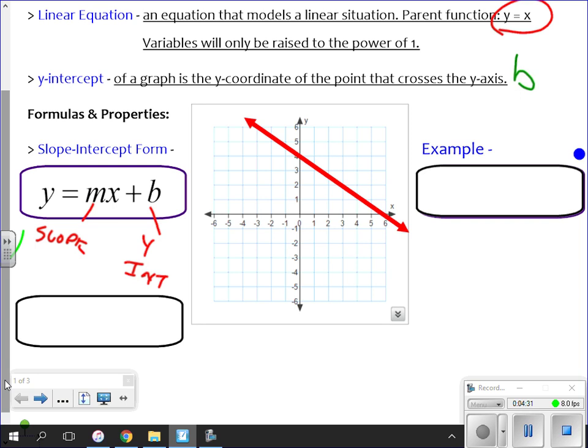Here's an example. Y equals negative two-thirds X plus four. That is an example equation. That is actually the equation that is graphed there right now. Your y-intercept, your B, is four. That's where it crosses the y-axis. Whatever is plus or minus is where it crosses the y-axis. That's your y-intercept. Plus four, it crosses at four.